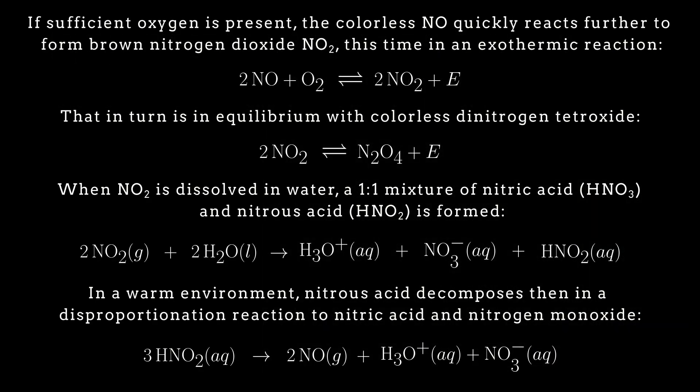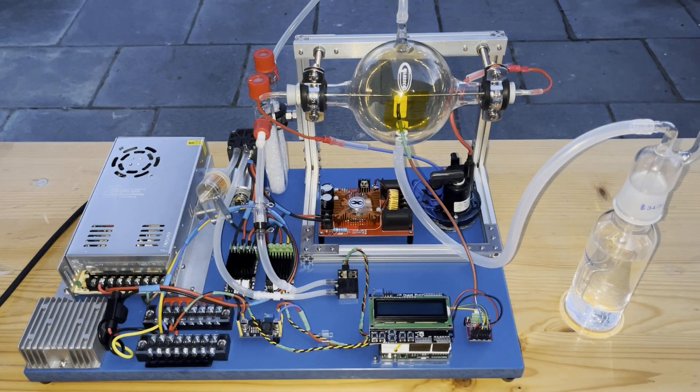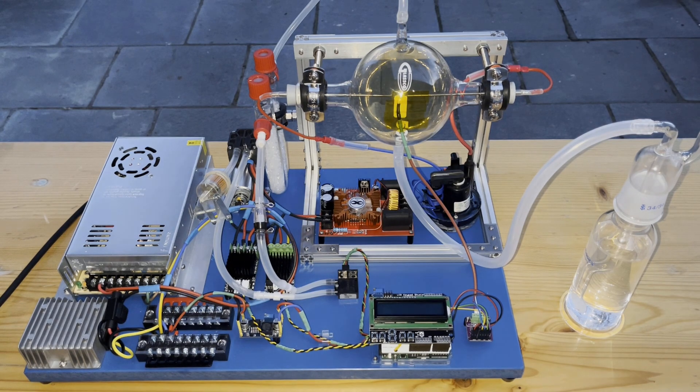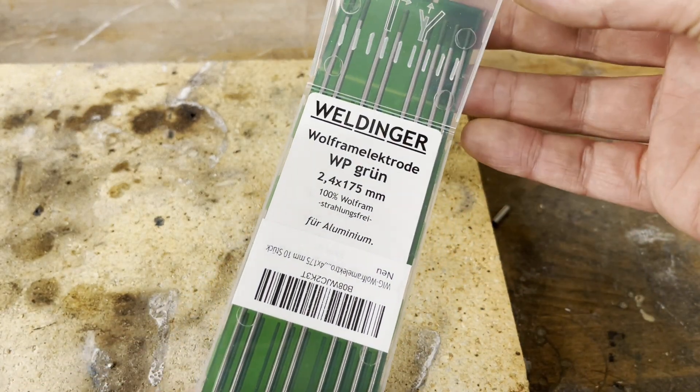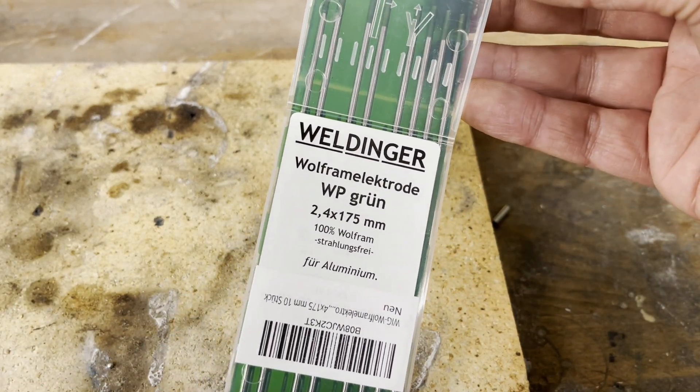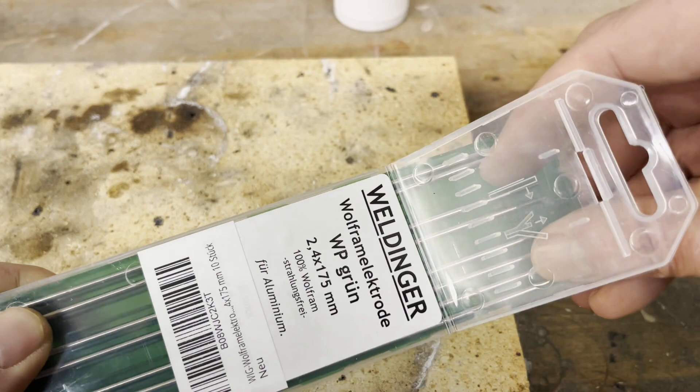Okay, now that the dust has settled, I will start by showing you the device I built. I began the construction with the electrodes, which consist of tungsten welding electrodes. Tungsten is the chemical element with the highest melting and boiling point.